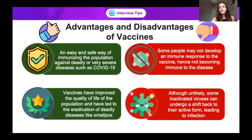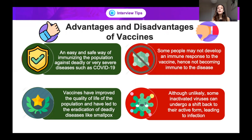Now, looking at the advantages and disadvantages of vaccines, because this is a very hot topic at the moment. Vaccines are an easy and safe way of immunizing the population against different deadly or very severe diseases such as COVID-19. On the other side, unfortunately, some people may not develop an immune response to the vaccine, hence not becoming immune to the disease.